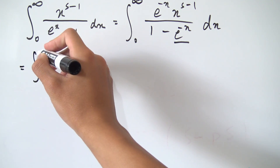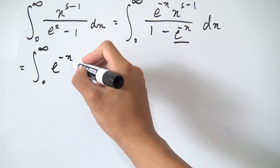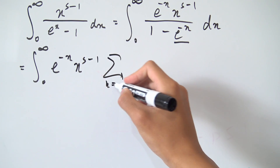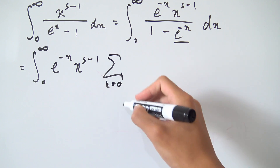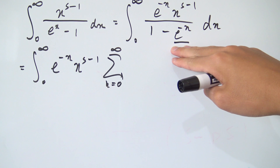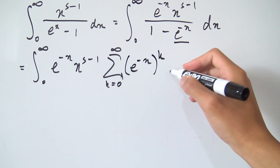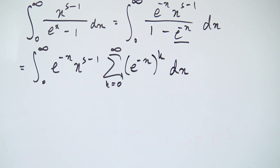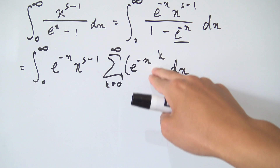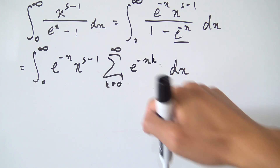So we can turn this into a geometric series now. We're going to have the integral from 0 to infinity of e to the minus x times x to the s minus 1, multiplied by a sum running from k equals 0 to infinity of e to the minus x raised to the kth power, then dx. We have a power raised to another power, and we can just multiply those powers together.